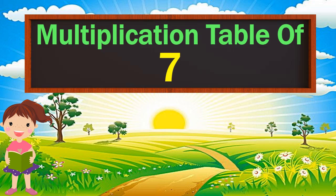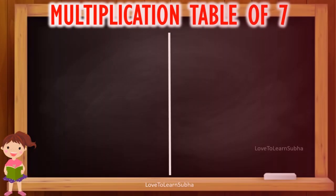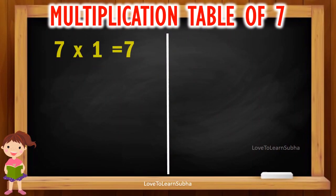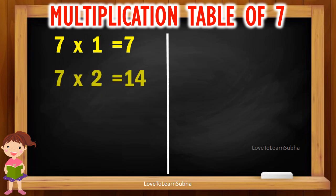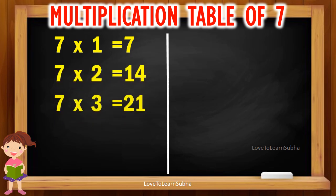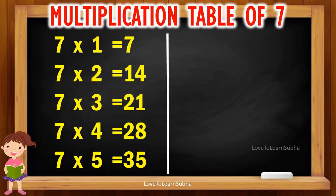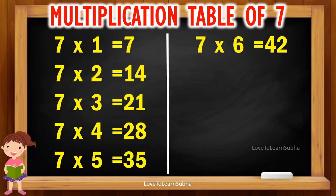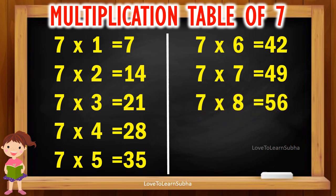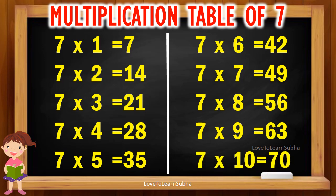Multiplication table of 7. 7 1s are 7, 7 2s are 14, 7 3s are 21, 7 4s are 28, 7 5s are 35, 7 6s are 42, 7 7s are 49, 7 8s are 56, 7 9s are 63, 7 10s are 70.